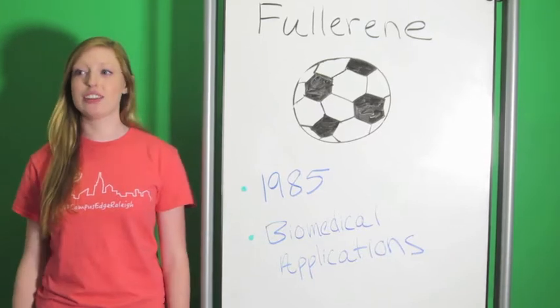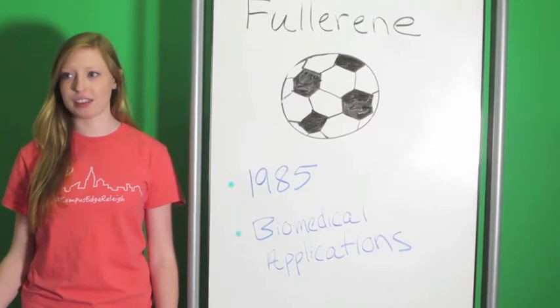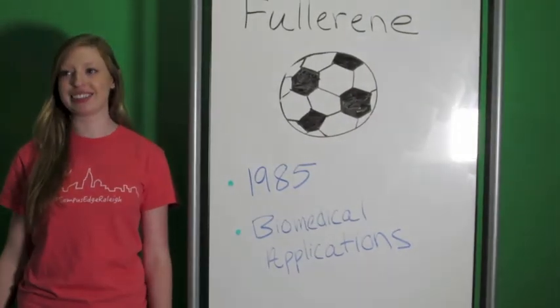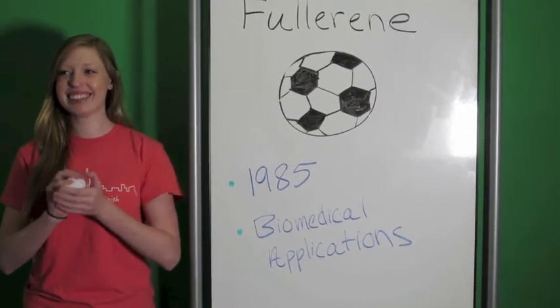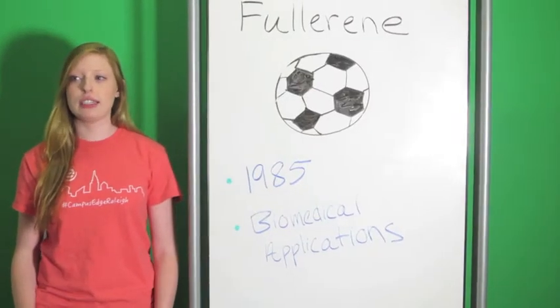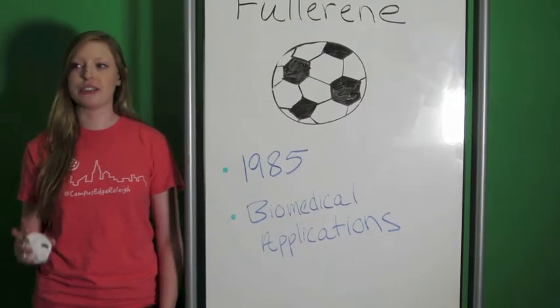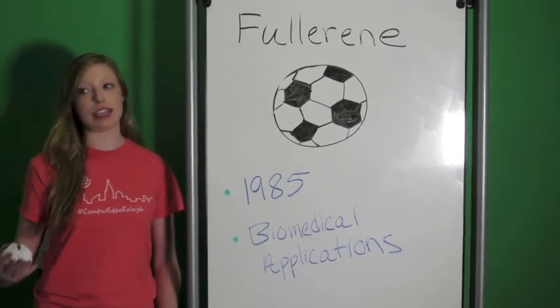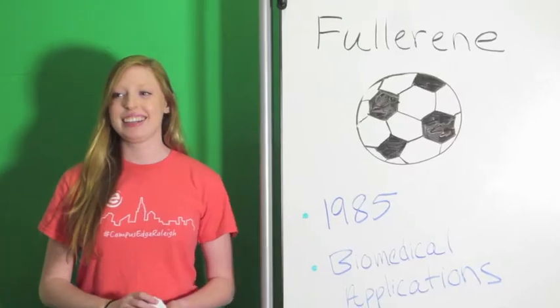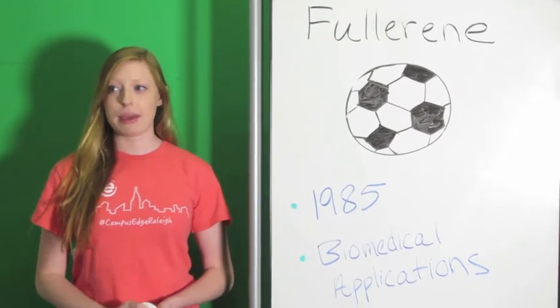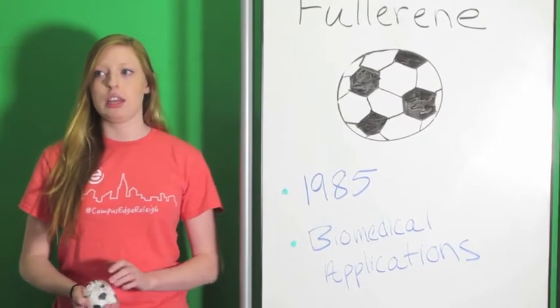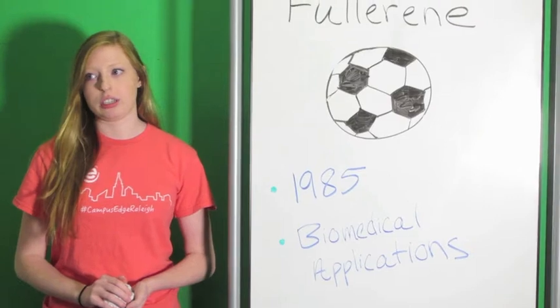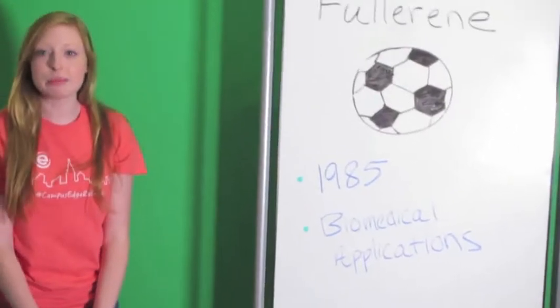Fullerene is considered the largest, most symmetrical molecule. It has a similar structure to a soccer ball. It was first discovered in 1985 and is similar to the structure of graphite as it is composed of stacked graphene sheets. They are used in several biomedical applications, including MRI and X-ray imaging contrast agents.